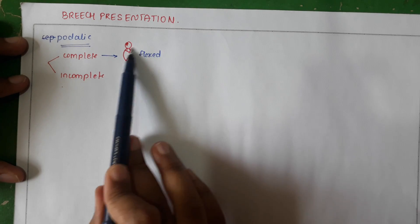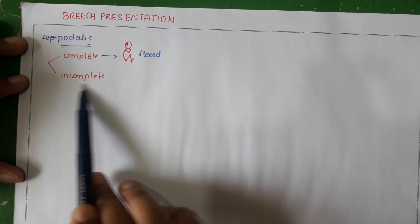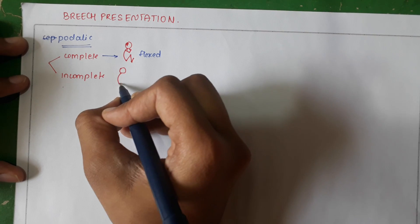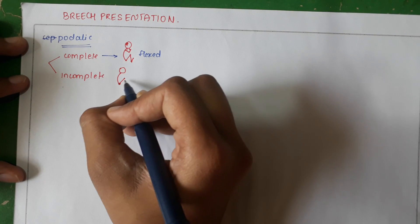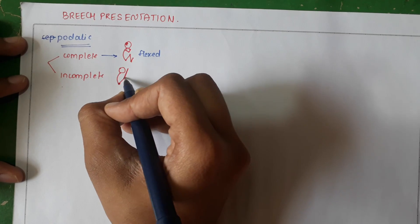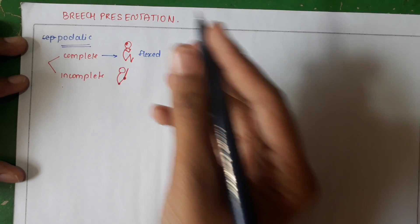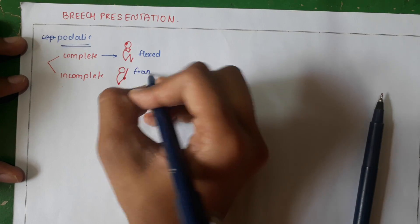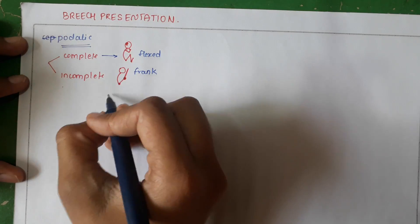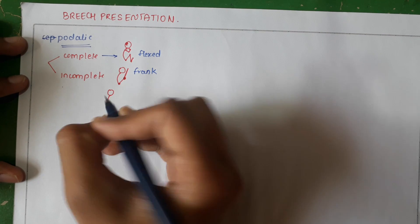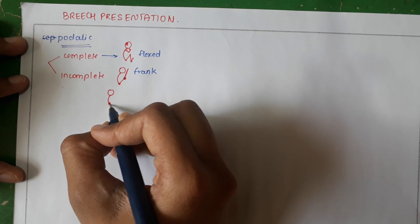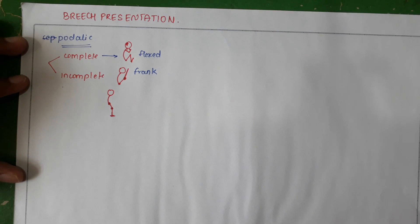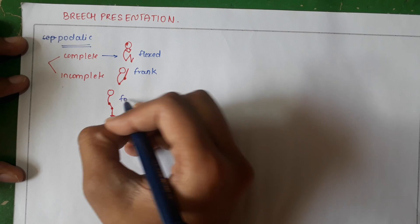In an incomplete Breech, if any of these flexions is not happening, then it becomes an incomplete Breech. If there is flexion at the hip joint but extension at the knee joint, then this becomes a frank Breech. If there is extension at the hip joint and slight extension at the knee joint, then this will be called a knee presentation.